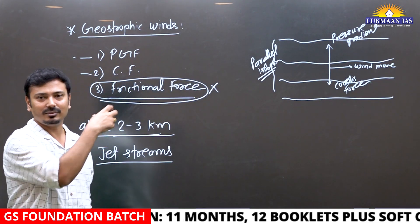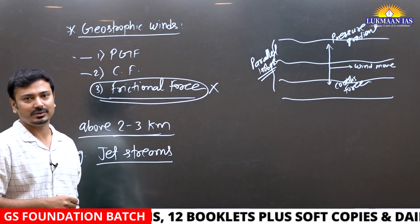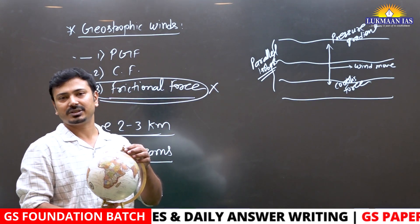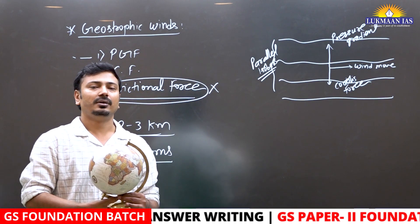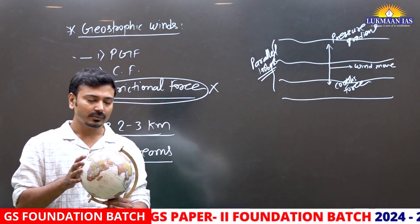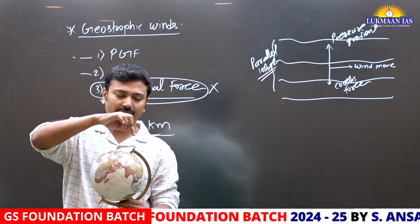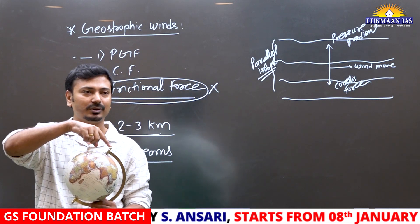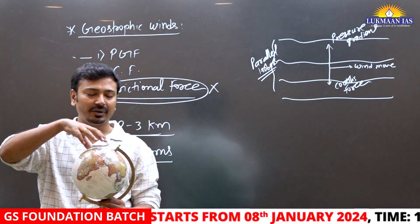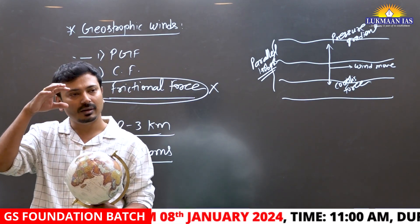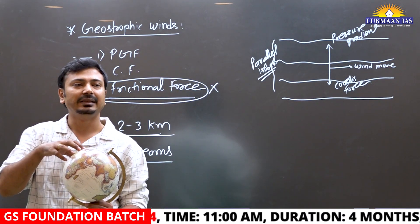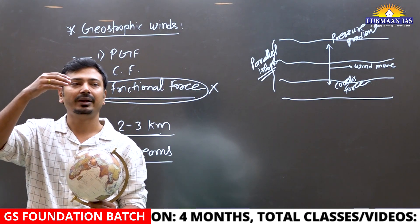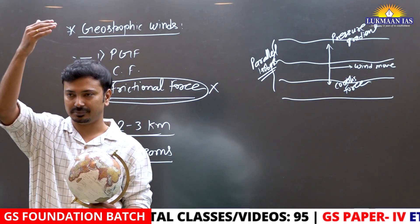That is basically geostrophic winds, and jet streams are the example. There is high pressure near the poles at the surface. Whenever there is high pressure near the surface, an opposite pressure area is always formed in the upper atmosphere.